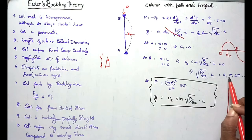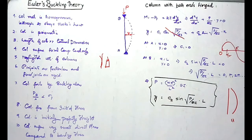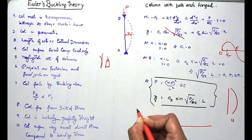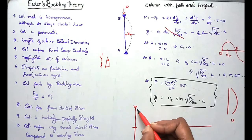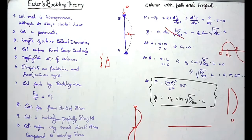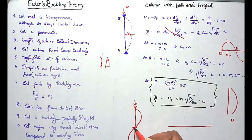For n = 1, the buckling mode is a single half sine wave shape. For n = 2, the buckling corresponds to a complete sine wave — two half sine functions from 0 to 2π. So n = 2 corresponds to two half sine waves, and n = 1 corresponds to a single half sine wave.